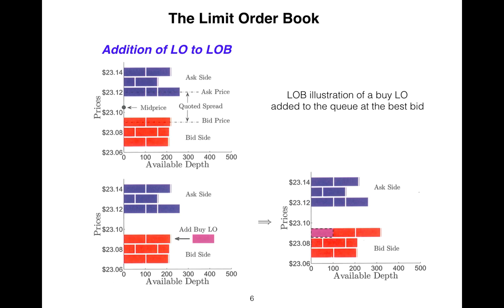What is the addition of a limit order to the limit order book? As you see, there are some queues. This is the illustration of a buy limit order added to the queue at the best price. In this way, we can find the quoted spread, which is the difference between ask price and bid price.